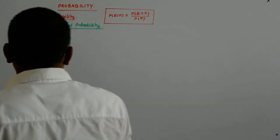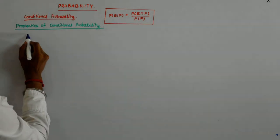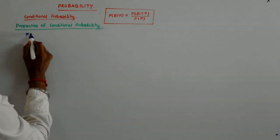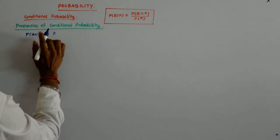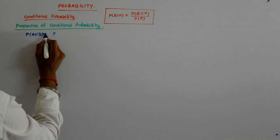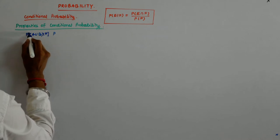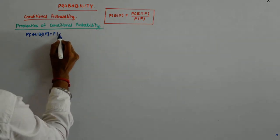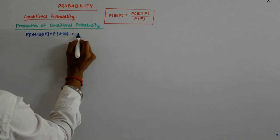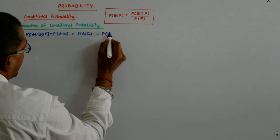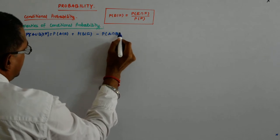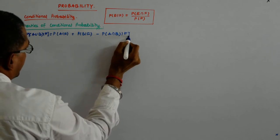We have done two of the properties and we had seen that P(A∪B|F) is equal to P(A|F) plus P(B|F) minus P(A∩B|F).